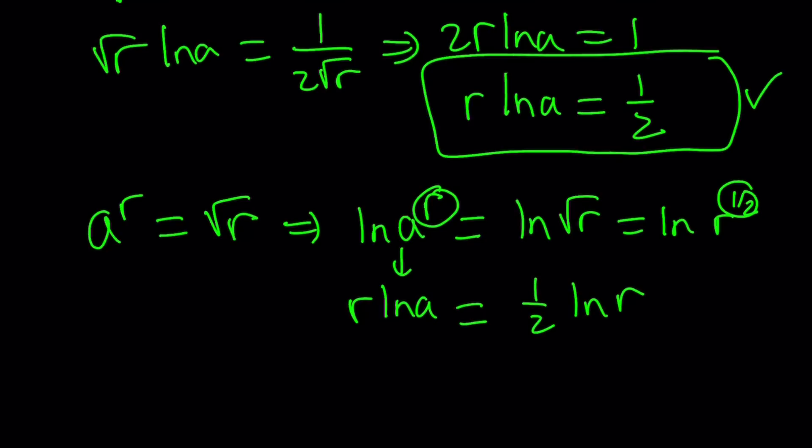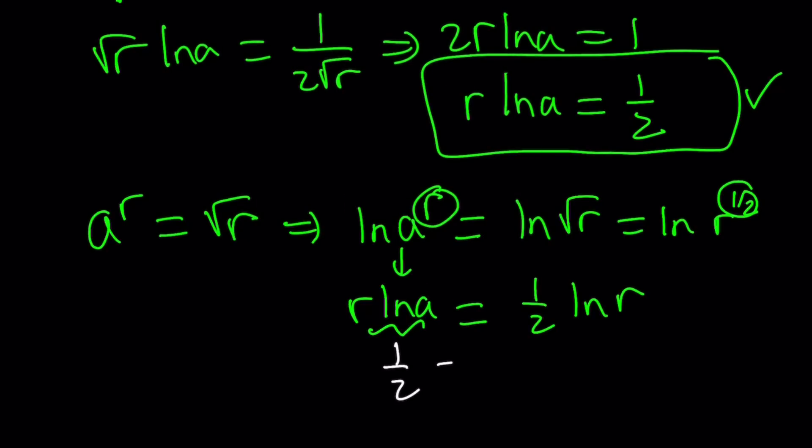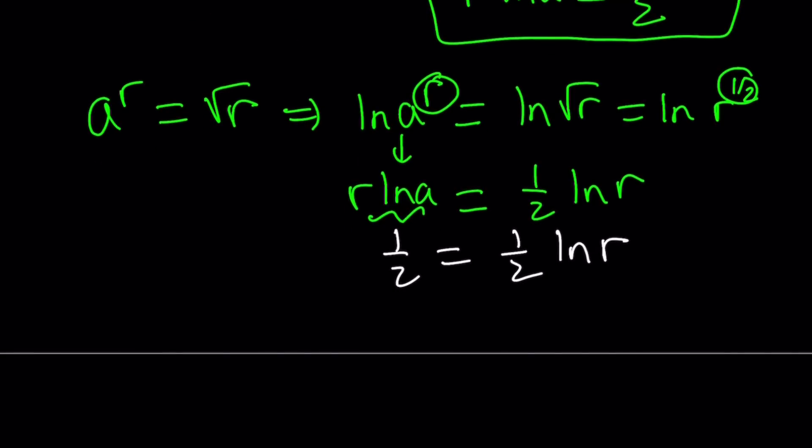And we know that r ln a is 1 half, so we can replace this with 1 half. And that's going to give us 1 half equals 1 half ln r. And then from here, we're going to get ln r equals 1, which implies r equals e, Euler's number. Great.